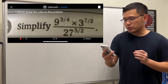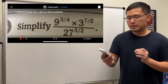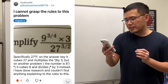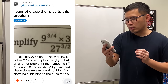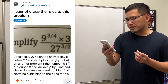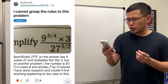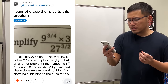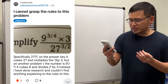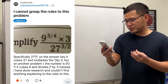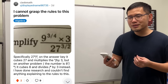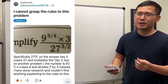I cannot grasp the rules to this problem, specifically 27 raised to the power of 3 over 2. On the answer key it cubes 27 and multiplies the 3 by 3, and I know it gets confusing.